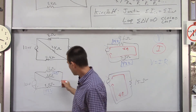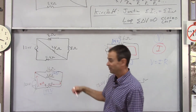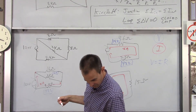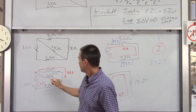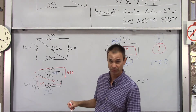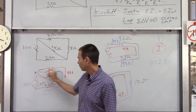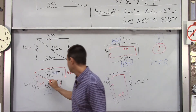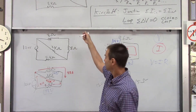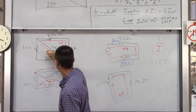Now finding individual currents: the 8-amp total current splits at the junction. For the 16-ohm resistor: 76.8 ÷ 16 = 4.8 amps. For the 24-ohm resistor, we can use V ÷ R, or apply Kirchhoff's junction rule: 8 − 4.8 = 3.2 amps. Both methods confirm 3.2 amps through the 24-ohm resistor. Those two currents recombine to 8 amps.